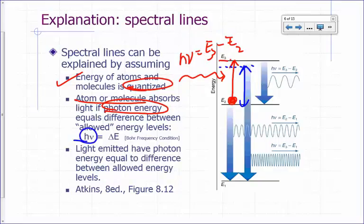H·ν, the energy of the photon, must equal delta E. This equation is known as the Bohr frequency condition.